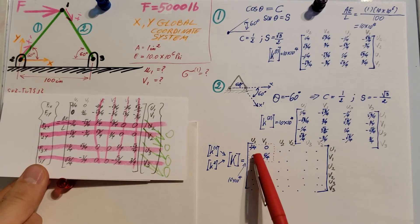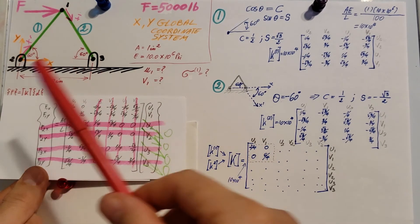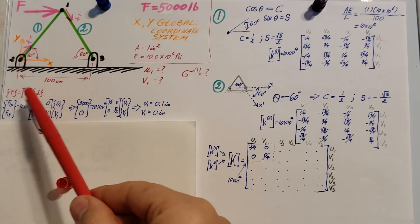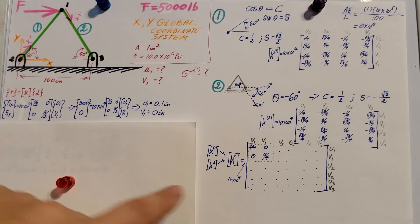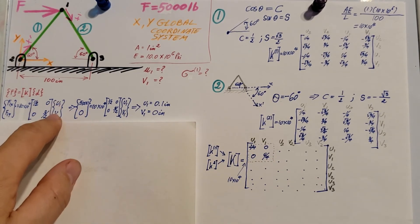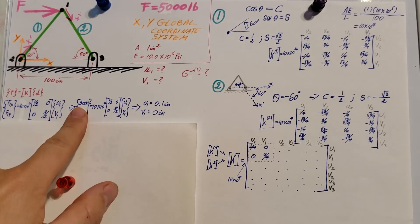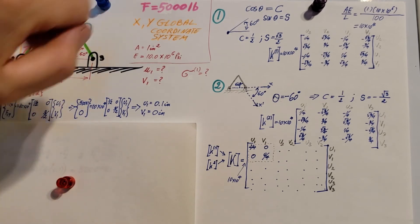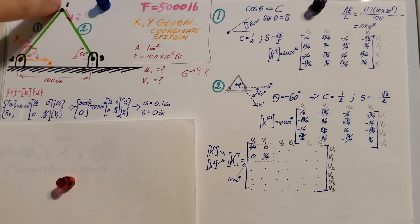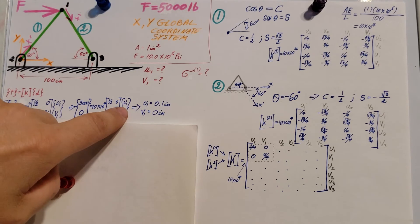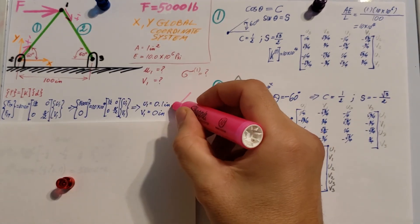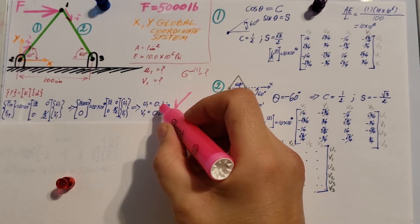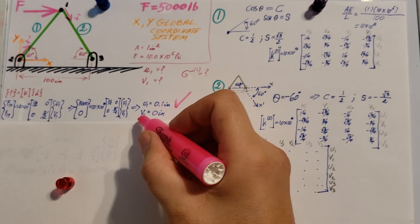With our partial global stiffness matrix, I work on f equals k times d, expanding with only the values I'm interested in: u1 and v1. I plug in the known stiffness values. In the x direction, F1x is 5000 pounds as given. In the y direction there is no applied force, so it's zero. Solving for u1 and v1, we get that node 1 displaces 0.1 inches in the horizontal direction and zero in the vertical direction.